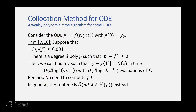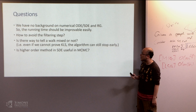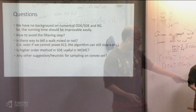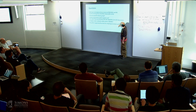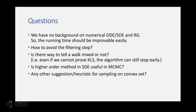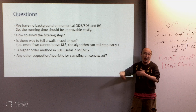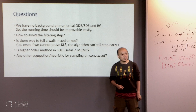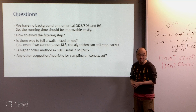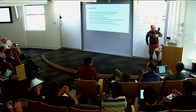To conclude, since Santosh and I don't have background in ODE, SDE, or Riemannian geometry, we welcome input from the audience. Open questions include: how to avoid the Metropolis filtering step, how to bound the mixing time of the ball walk without KLS, whether higher-order methods (like our geodesic walk versus Euler discretization) are useful for SDEs in general, and what other heuristics exist for sampling.